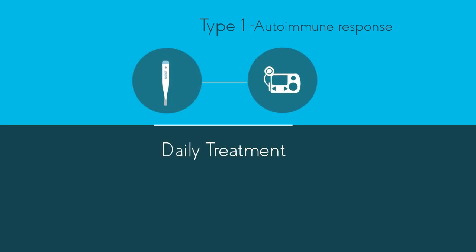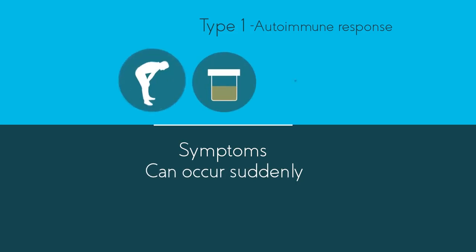The symptoms of type 1 diabetes are thirst, needing to regularly pass urine, tiredness and weight loss, and can occur very suddenly.